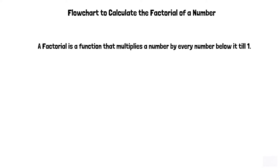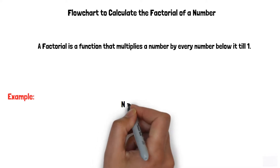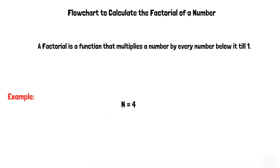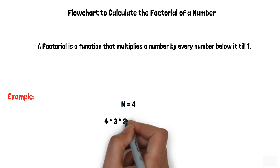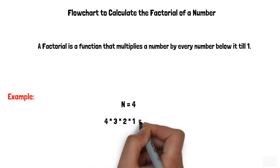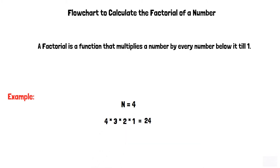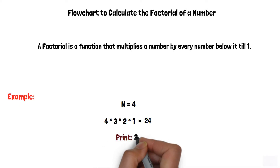A factorial is a function that multiplies a number by every number below it till 1. For example, consider n is equal to 4. Thus, the factorial of 4 will be 4 multiplied by 3 multiplied by 2 multiplied by 1, which is equal to 24. And hence, our program must print 24.